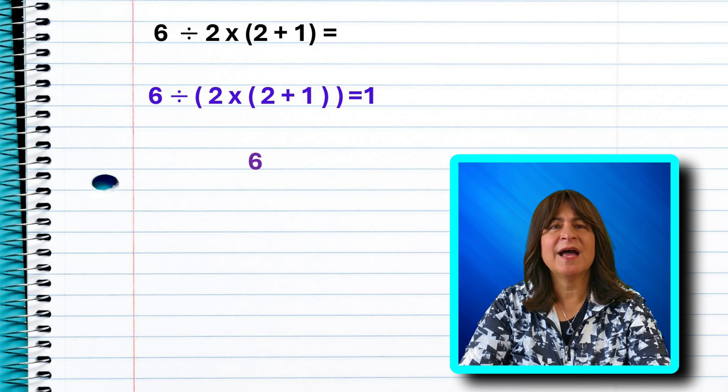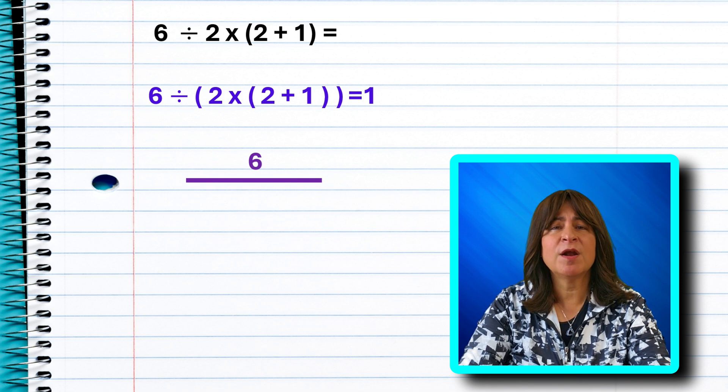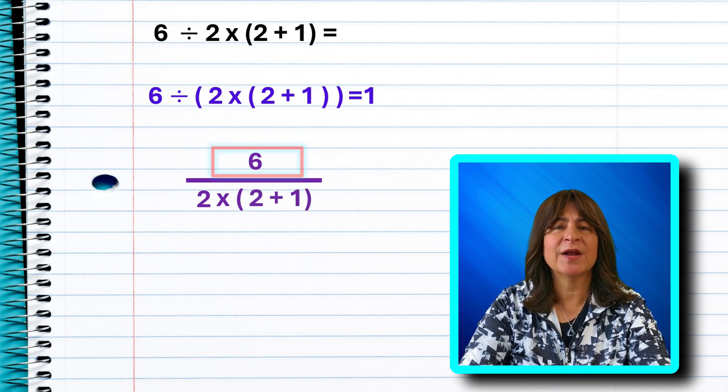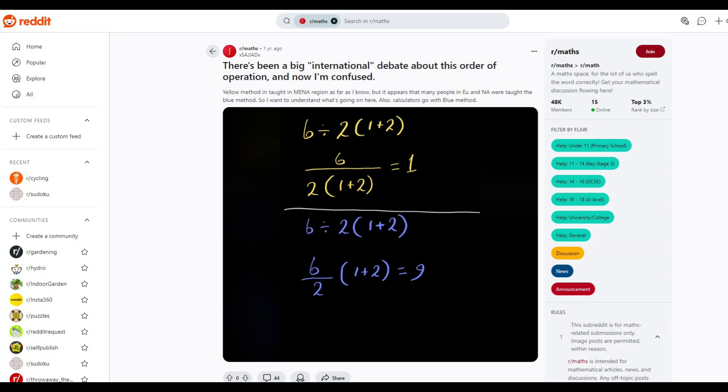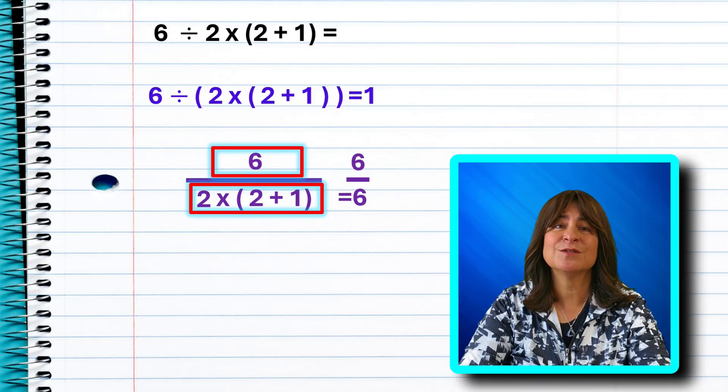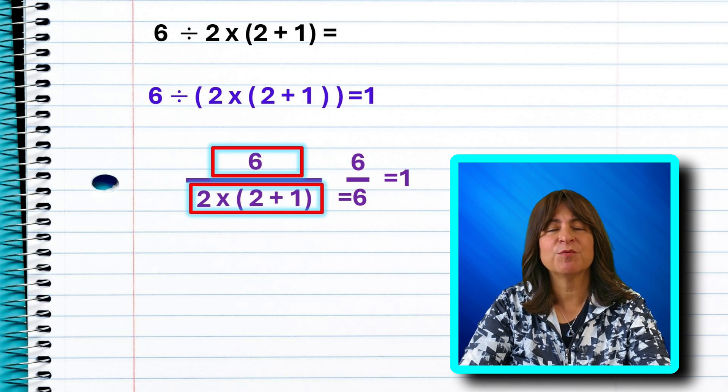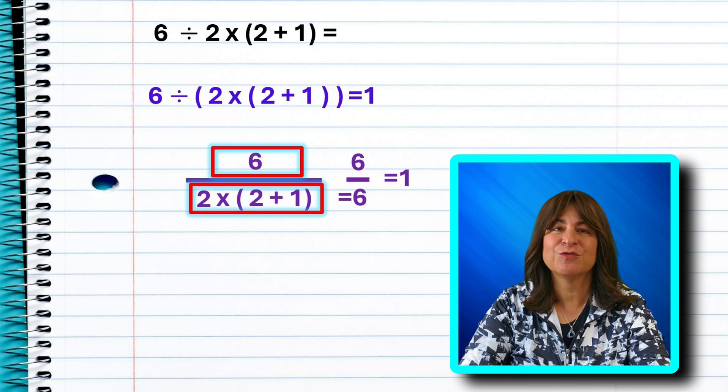Well, think about how we write division problems with a numerator and a denominator. Then this problem would be written like this. 6 over 2 times, in parentheses, 2 plus 1. In this case, many people would see the numerator as separate from the denominator, and then solve this with implicit parentheses around the denominator. Now, if you solve the denominator first, you get 6, and then 6 divided by 6 is 1. The solution is, of course, to use more parentheses to make the problem clearer, and then there wouldn't be any controversy.